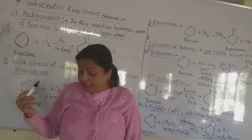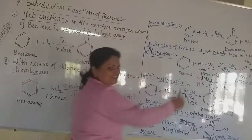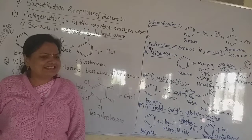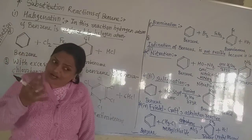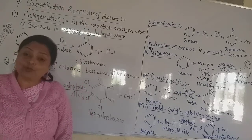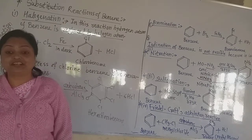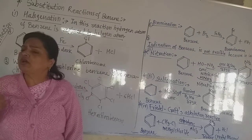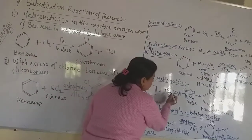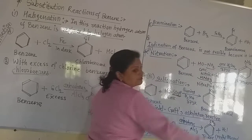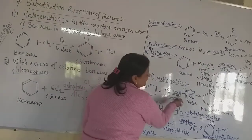The third electrophilic substitution reaction of benzene is the sulfonation of benzene. As the name suggests, there is introduction of the sulfonic acid group SO3H into the benzene ring — that means replacement of hydrogen of the benzene ring by the sulfonic acid group. This is concentrated sulfuric acid H2SO4.